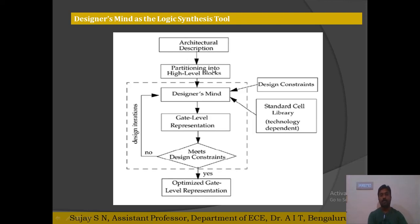The designer divides the design into high level blocks and further into logic blocks. Once it is partitioned into the high level blocks, the designer considers the design constraints and the available standard cell library with respect to the technology, and converts that high level design into gate level representation.